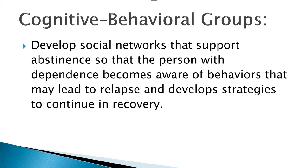CBT groups develop social networks that support abstinence so that the person with dependence becomes aware of behaviors that may lead to relapse and develops strategies to continue in recovery. With cognitive behavioral therapy, people will start practicing in group, but then when they see each other in meetings, they can identify those irrational automatic thoughts in each other. The social networks start talking the same language and help draw people's awareness to things happening seemingly unconsciously that are keeping them miserable.